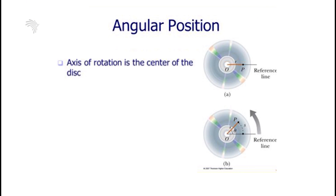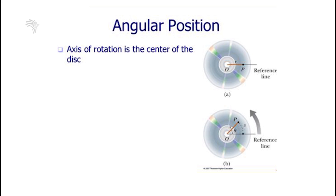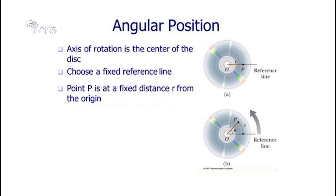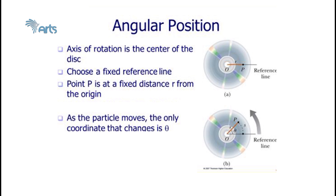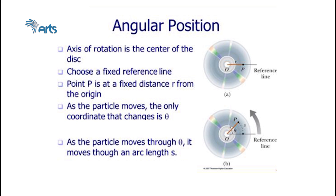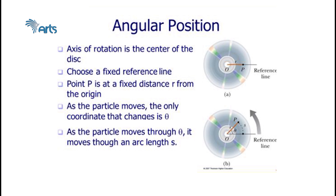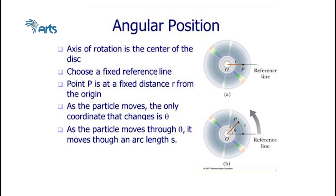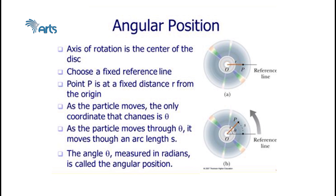For angular position, as you can see on the screen, the axis of rotation is the center of the disk. We choose a fixed reference line, and point P is at a fixed distance r from the origin. As a particle moves, the only coordinate that changes is theta. As the particle moves through theta, it moves through an arc length s, and the angle theta measured in radians is called angular position.